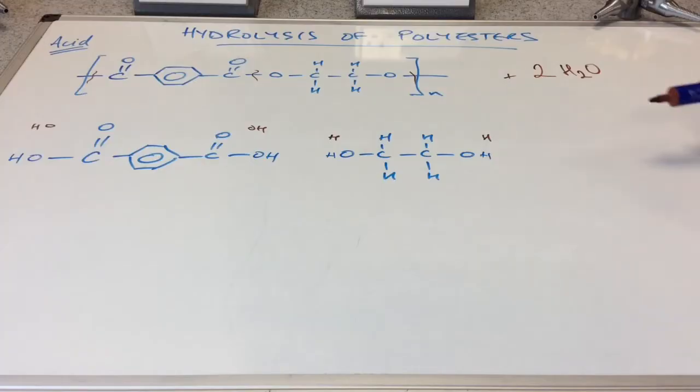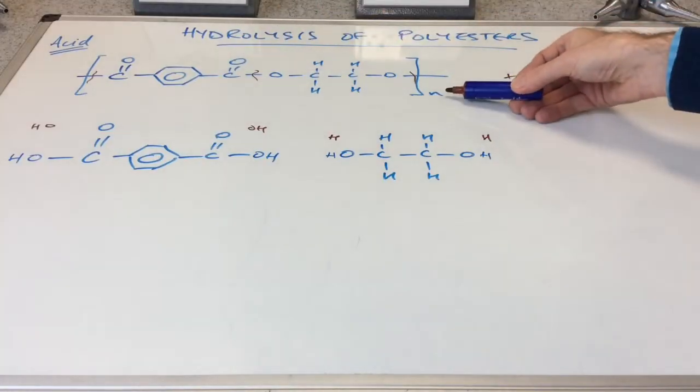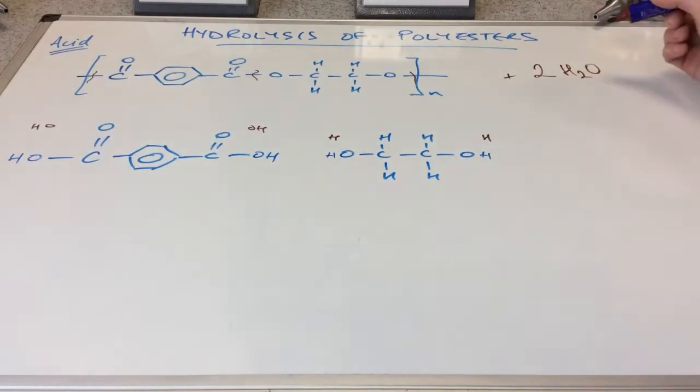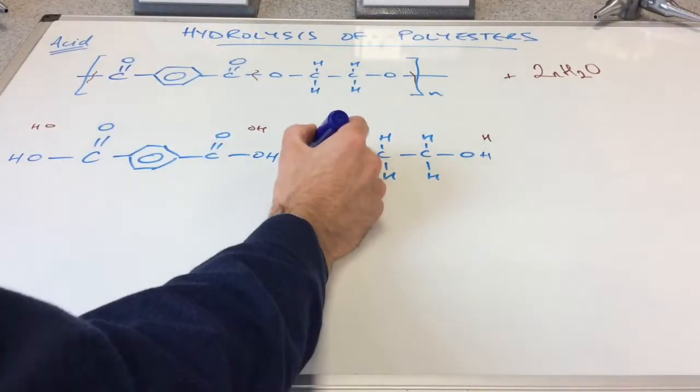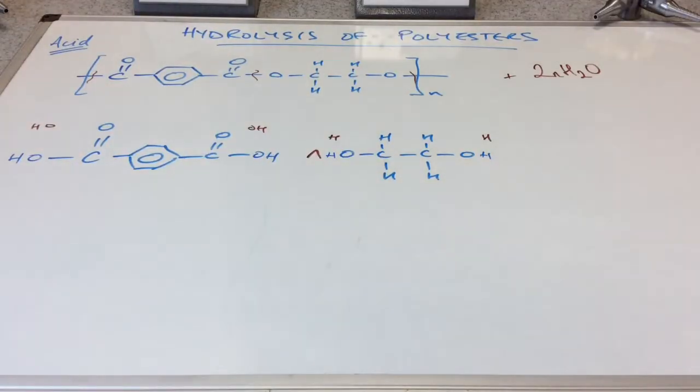Now, that's for each repeat unit. We've got N repeat units. So we would use two N moles of water. And that would create N moles of the dicarboxylic acid and N moles of the diol.